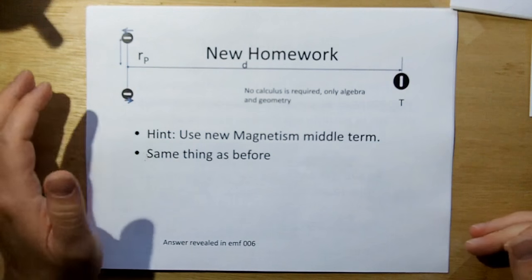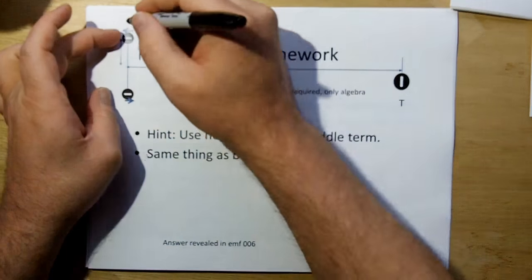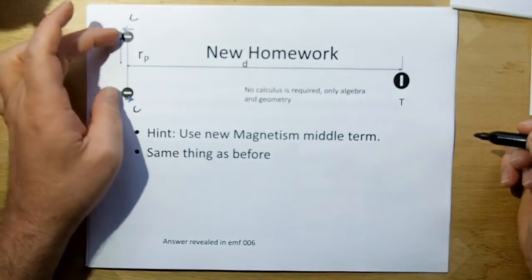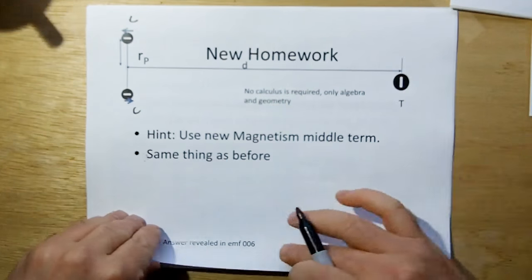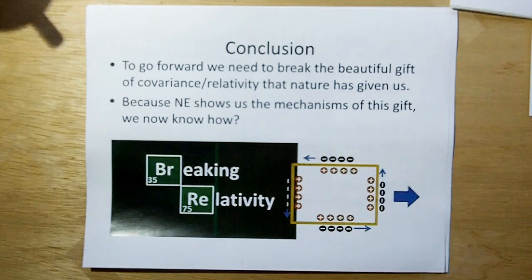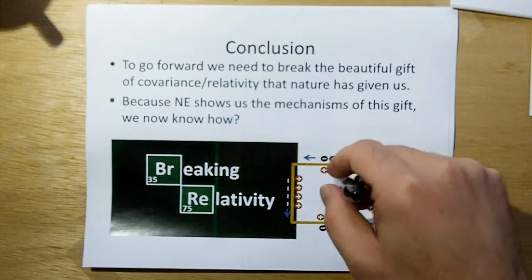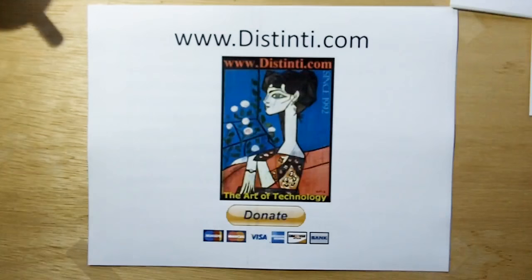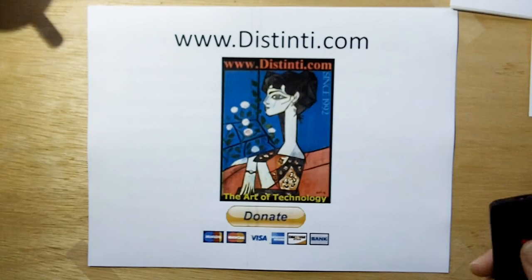Here's the new homework: use the middle term of new magnetism and do the same thing as before. These charges orbit at C — the tangential velocity, the speed of light. Compute the effects on the target charge at distance D, where D is much greater than RP. The answer will be in the next video. To go forward, we need to break the beautiful gift of covariance relativity that nature has given us. New electromagnetism shows the mechanisms of this gift, so we now know how to do that — basically we need to break the charge balance of our experiments. Thank you very much, and thank you for the donations.